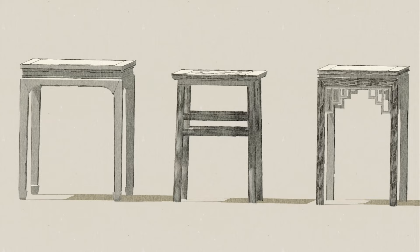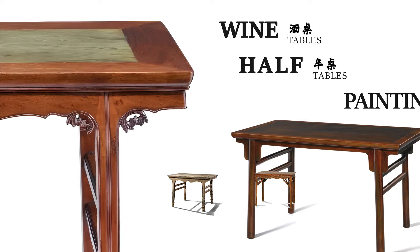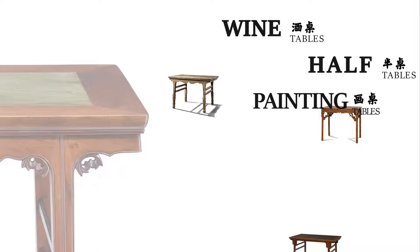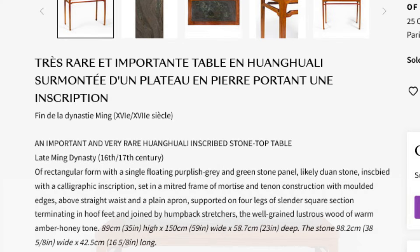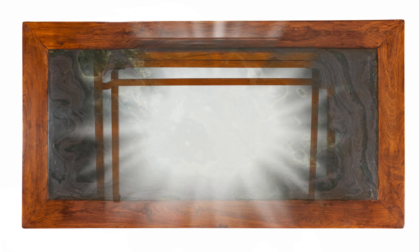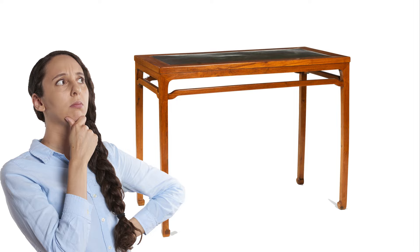Now that we have a rough idea of the differences between these three table types, let's leave you with one final example to stir things up. This piece proportionally looks a bit like a half table, although lengthwise it's pretty long for a half table — closer in that regard to a painting table. And yet it has an inset stone panel on the top surface, which makes one think wine table, although proportionally for a wine table it's all wrong. So what is it? Maybe leave your answer in the comments below.